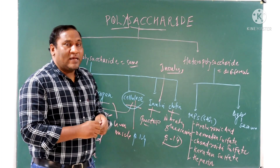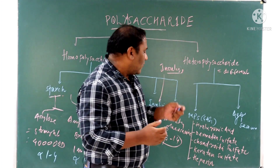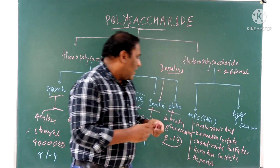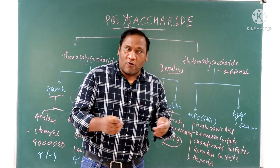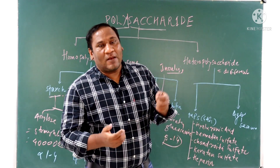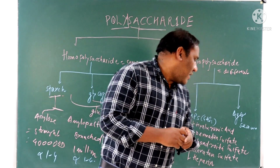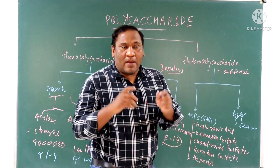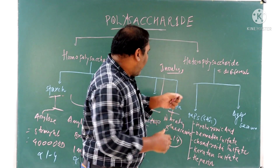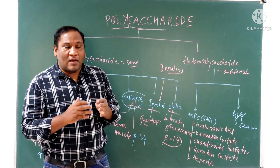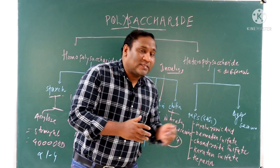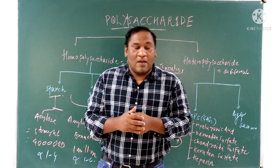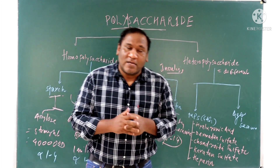Mucopolysaccharides are polymers of amino sugar and uronic acid. Examples include hyaluronic acid, dermatan sulfate, keratan sulfate, chondroitin sulfate, and heparin. Mucopolysaccharides are a large topic and will be covered separately in the next video.